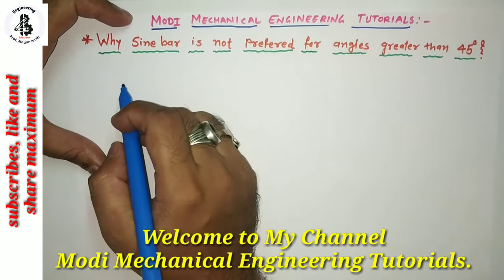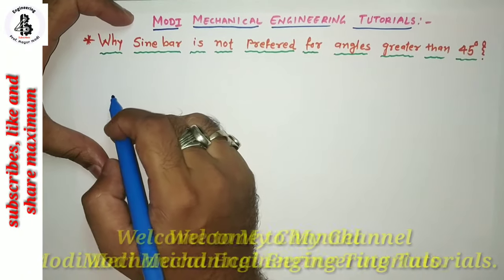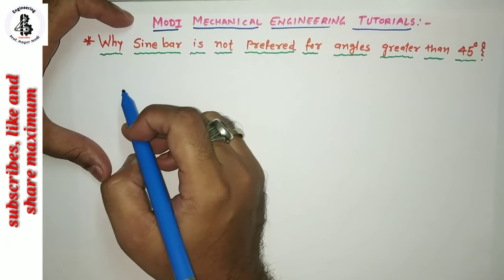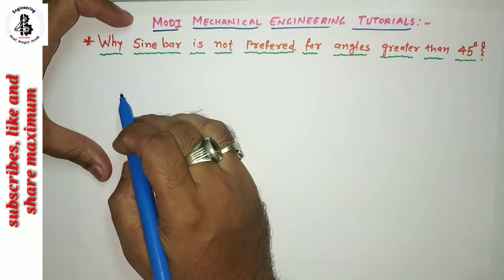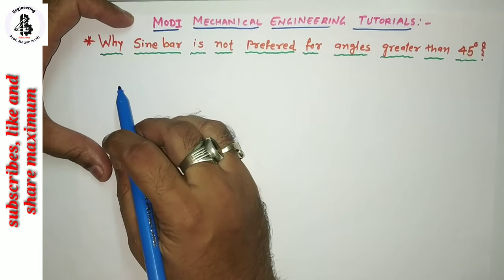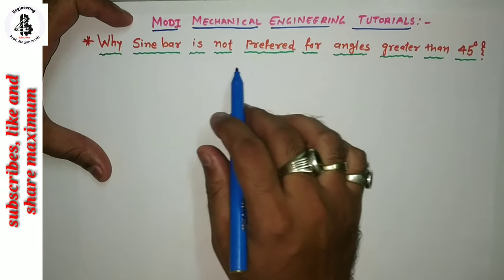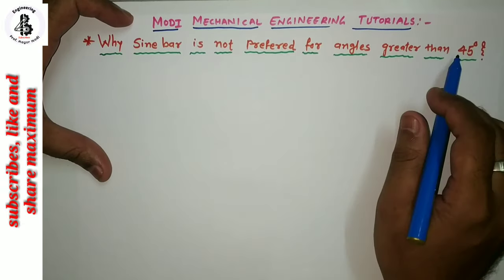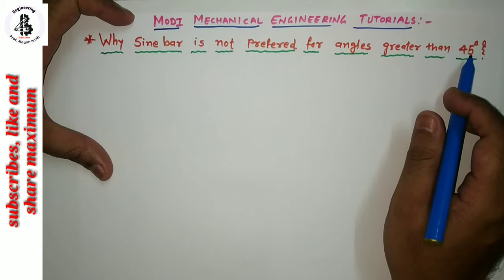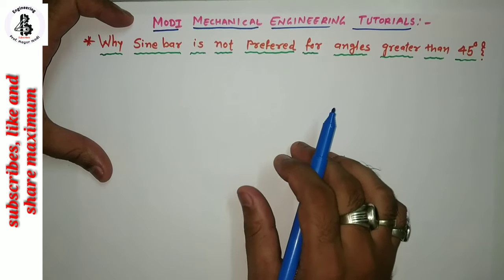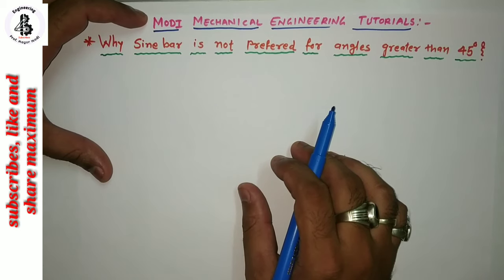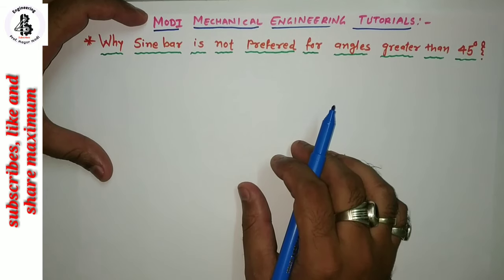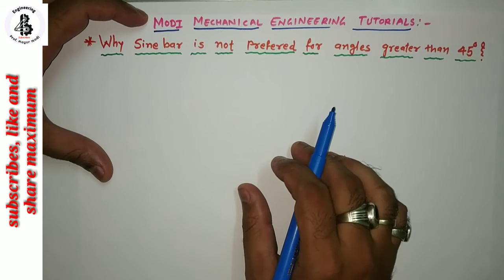Welcome to my YouTube channel Modi Mechanical Engineering Tutorials. Today in this video I would like to explain one of the important parts of measurements, related to the sine bar. The most common question is: why is a sine bar not preferred for angles greater than 45 degrees? In my previous lecture I already explained the sine bar and its principle with different kinds of jobs for the measurement of angles with the application of the sine bar.